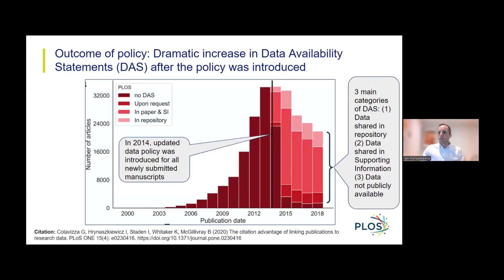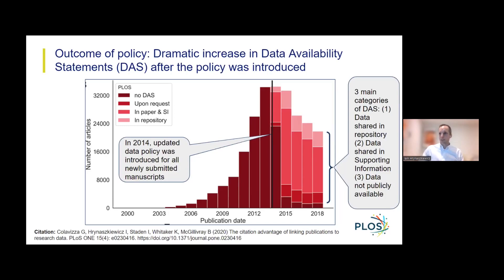What have been some of the outcomes of the policy since we introduced it in 2014? We've observed several outcomes that can be correlated with or were caused by the implementation of the policy. The first outcome I want to highlight is based on an independent analysis of PLOS articles, which shows that the proportion of PLOS articles that include a data availability statement increased dramatically after the updated policy was introduced in 2014.